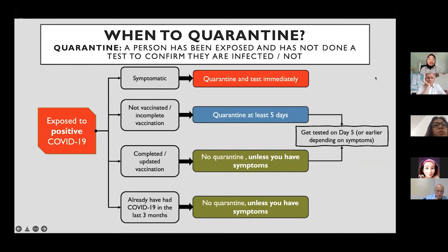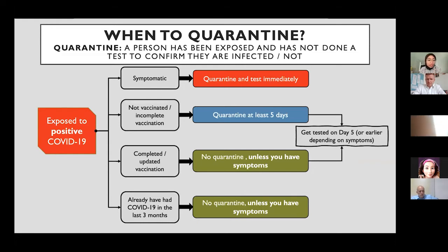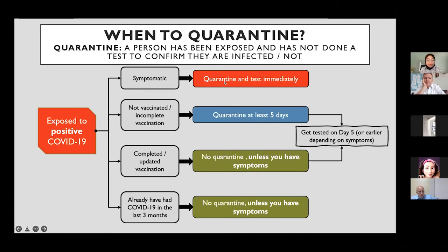Quarantine is defined as applying to a person who has been exposed or had close contact but whose infection status is not yet known because they have not been tested. For example, if you have been exposed to someone who's positive and you have symptoms, you should quarantine immediately and test immediately with an antigen test.